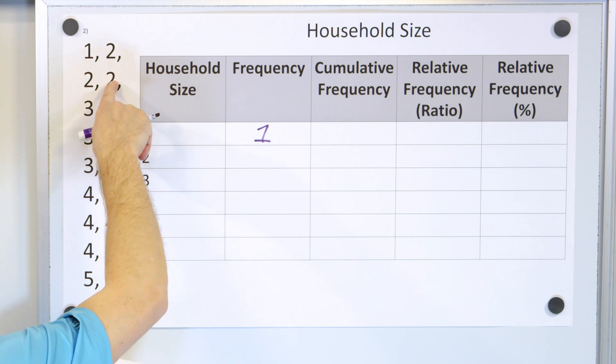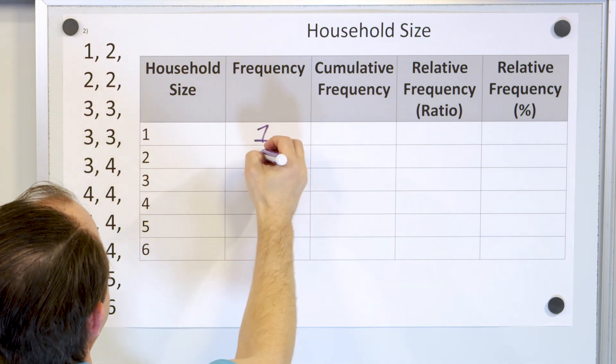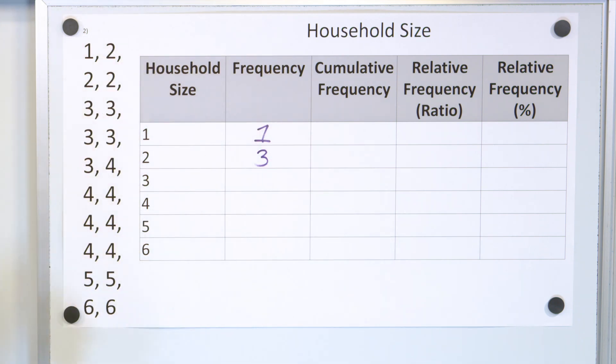How many have two? One, two. There's only two there. There's the third one. So there's number three that have a household size of two. How many have a household size of three? One, two, three, four, five. So there's five people with a household size of three.